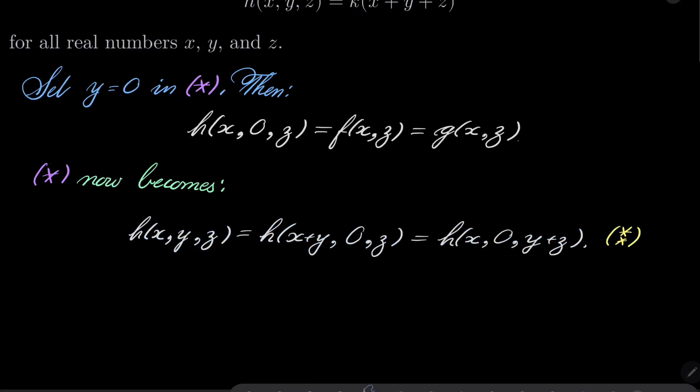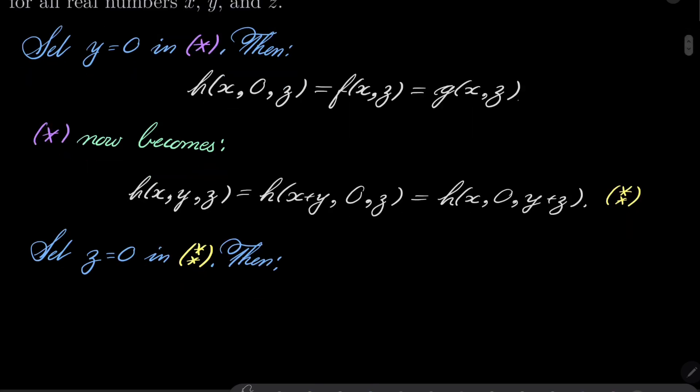And now let's set z to be zero in condition double asterisk. And then we have the following: if we set z to be zero, we see that h(x+y,0,0) = h(x,0,y). All right.